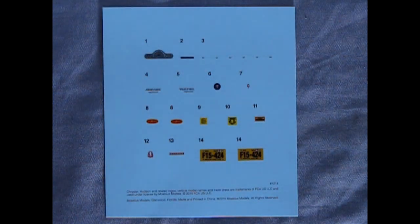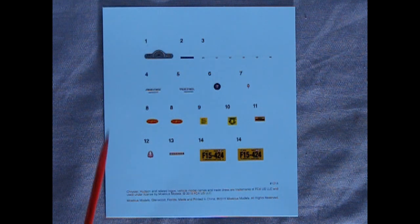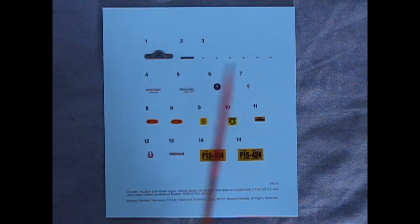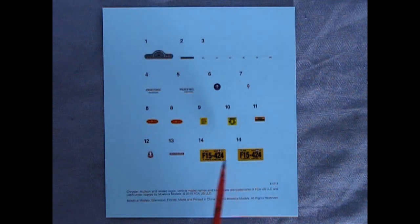Finally we have our decal sheet and if you peel off the paper you can see the amazing items on here. We have our instrument panel, all the little emblems, as well as our license plates.